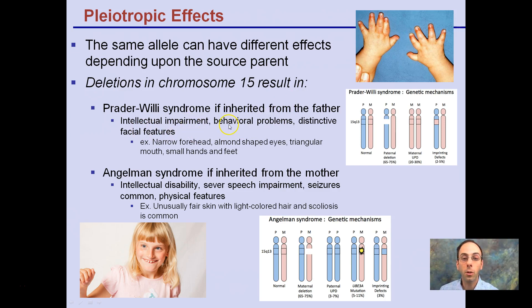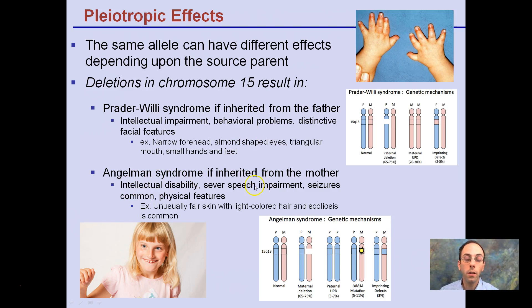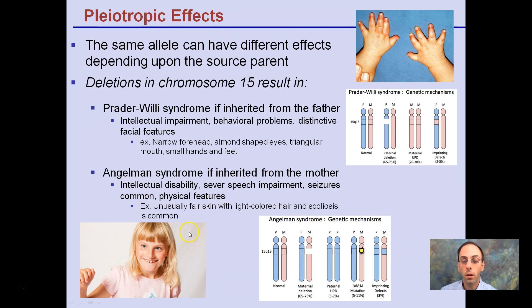Intellectual impairment, behavior problems, distinctive facial features — you can see here — a triangle shape to the mouth, small hands and feet, indicate it was inherited from the father. Angelman syndrome is inherited from the mother. This also has intellectual problems, potential speech impairments, seizures are common, and physical features can occur. So depending on which parent the deletion comes from, it determines the outcome experienced by that offspring.